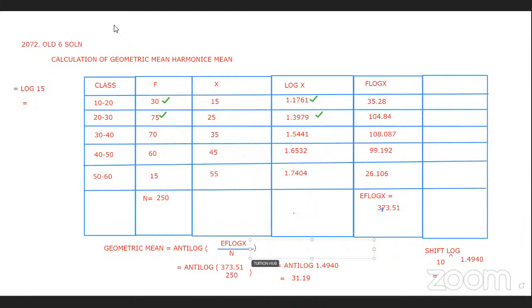A student asks about how to calculate the antilog on the calculator. The answer is: use shift, then log. First press shift, then press log — shift and log are used together. This was a value of 1.49, which gives the geometric mean.